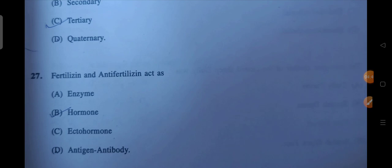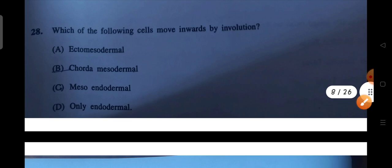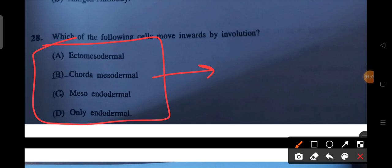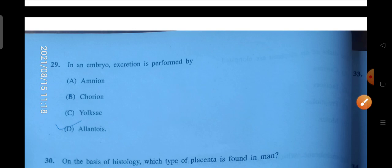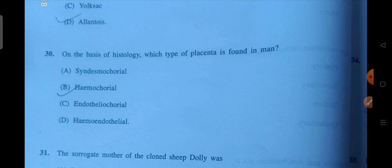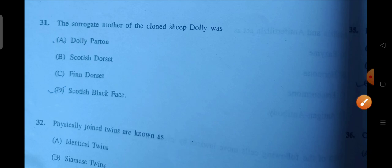Next is fertilizing and anti-fertilizing acts as hormones act. Next is which of the following cells move inward by involution? So I am not sure about this answer. If anyone of you is sure about this answer, you can comment in the comment box. Next is in an embryo excretion is performed by. So D will be the correct answer. Next is on the basis of histology which type of placenta is found in man? So B will be the correct answer.